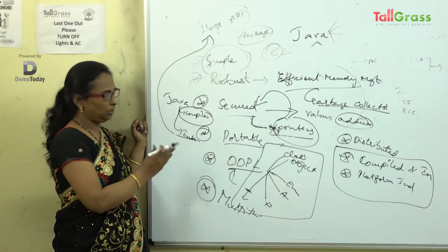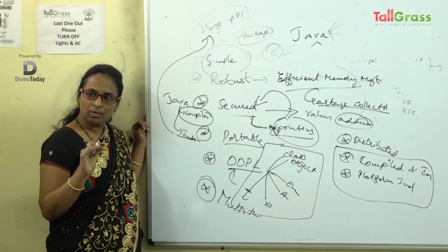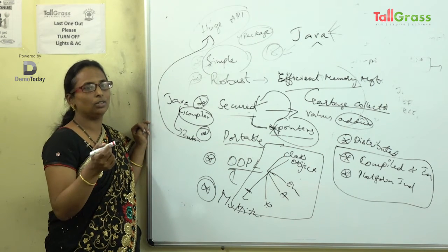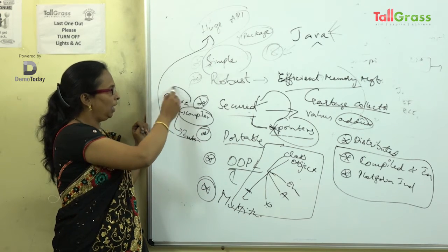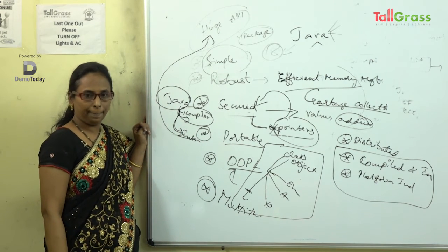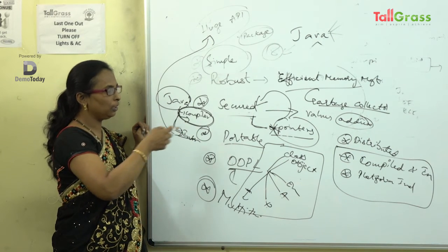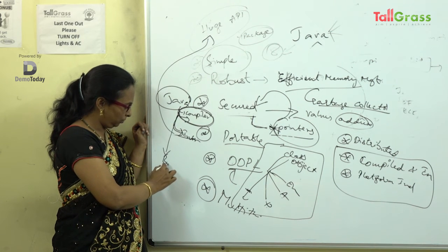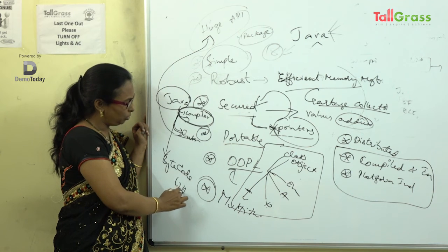In the compilation process in Java, when you write and compile a program, it does not directly translate to machine code. Instead, it translates to bytecode, where bytecode is represented in hexadecimal. Then in the interpretation process, this bytecode is translated to machine code.